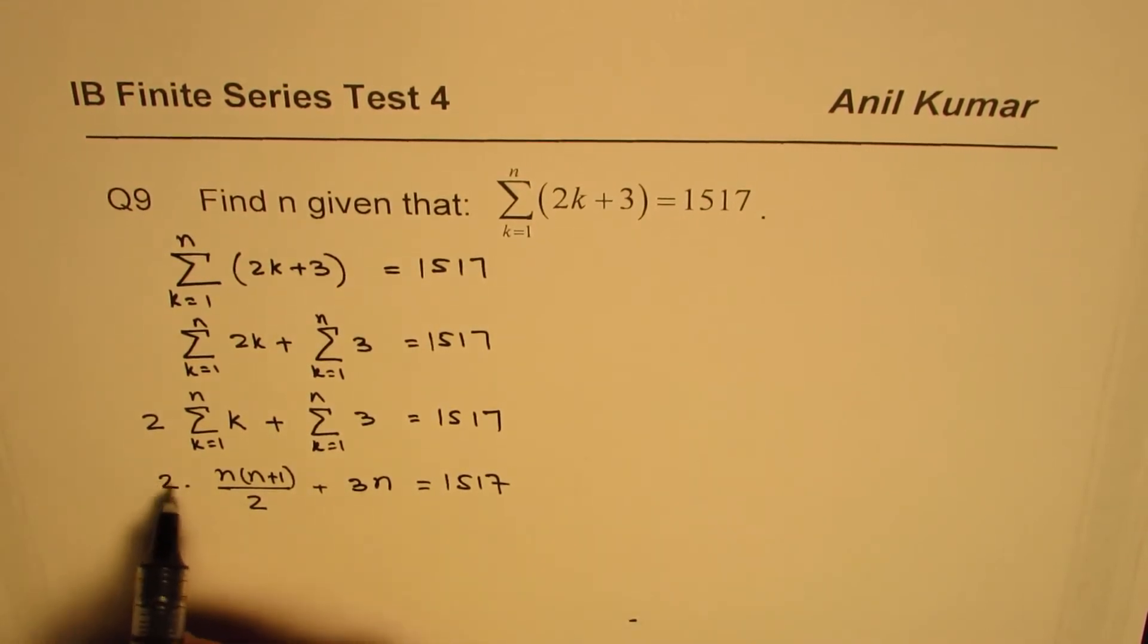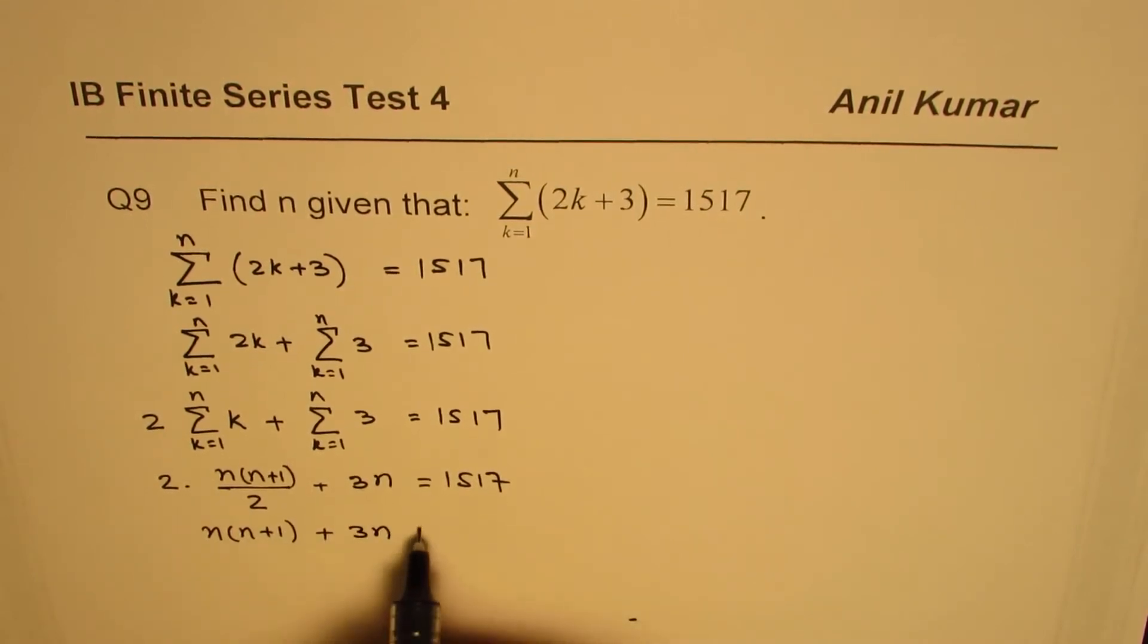You can simplify this. 2n, 2 cancels. Then you get n times n plus 1 plus 3n equals to 1517.